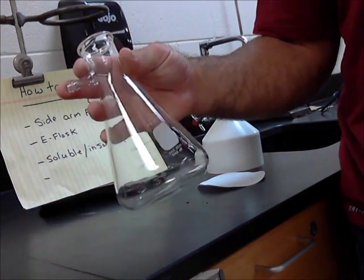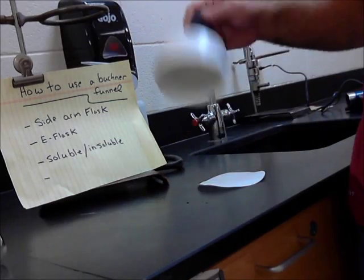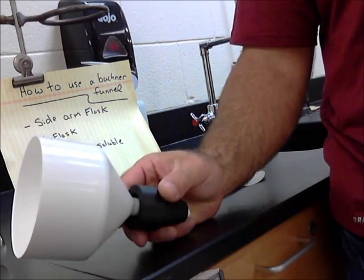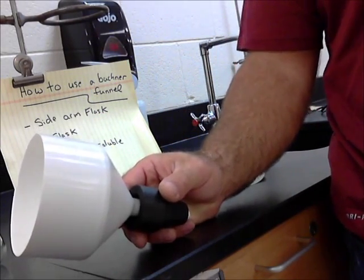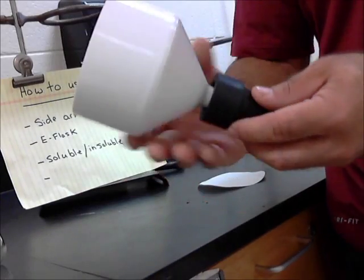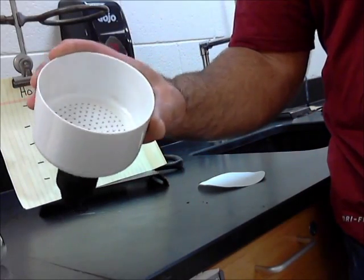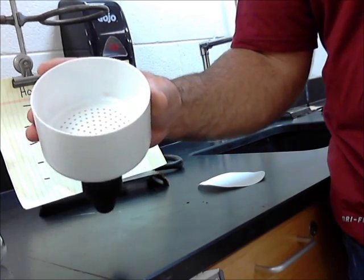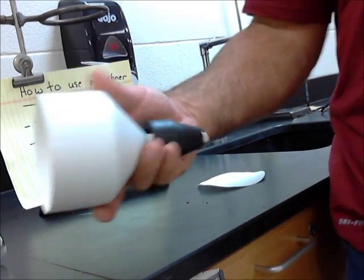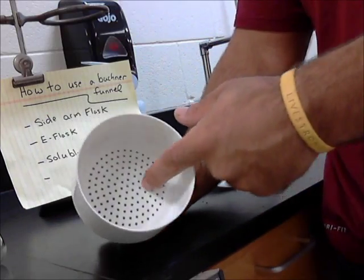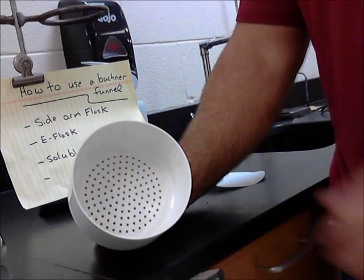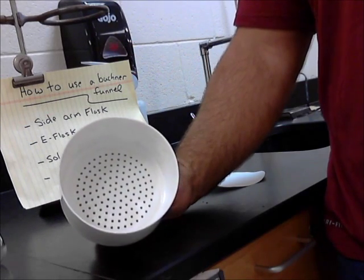All right, so side arm flask. I have a Buchner funnel, B-U-C-H-N-E-R. You can tell by the size of my hand, this is a fairly large container. These come in various sizes, bigger and smaller. Inside here, there are a bunch of holes and I also place my filter paper in here.